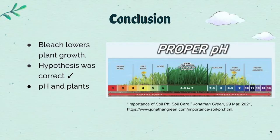Here's my conclusion. Bleach definitely lowers the growth of the basil plants. My hypothesis was correct because the larger amount of bleach you have in each solution, the longer it will take to grow in that amount of time.